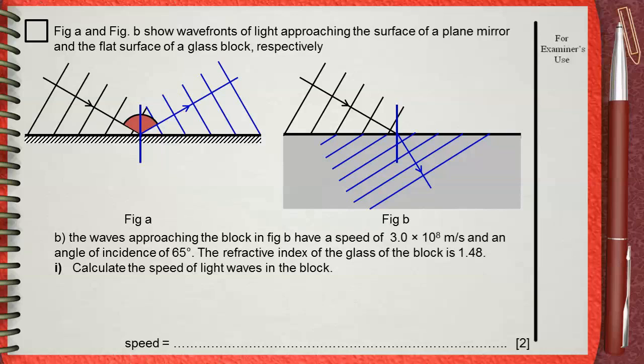Question B: The waves approaching the block in Figure B have a speed of 3 times 10 to the power of 8 meters per second and an angle of incidence of 65 degrees. The refractive index of the glass is 1.48. Calculate the speed of light in the block.